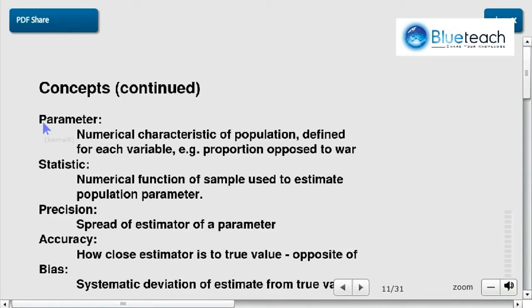Now we're going to define a very important concept: a parameter. A parameter is a numerical characteristic of a population defined for each variable. Remember, a variable could be age, for example, and so the parameter will be the average age. But the variable can also be whether someone agrees or not, and so the parameter could be the percentage of people who agree.